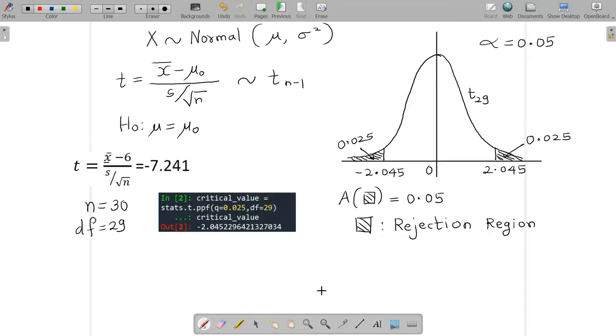But here we see one thing: this t statistic value is very much inside the rejection region. If you try to locate it, it may be somewhere here. By that particular logic, we can definitely say that we reject H0 at five percent level of significance.